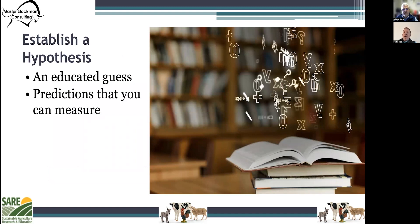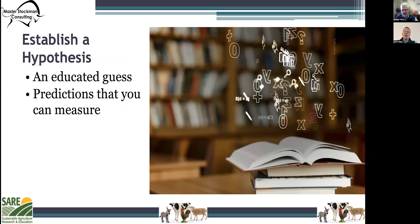Step three is establishing a hypothesis. A hypothesis is simply an educated guess about how things work. It is an attempt to answer your question with an explanation that can be tested. A good hypothesis allows you to then make a prediction — for instance, if I do this, then this will happen. Figure out both your hypothesis and the resulting prediction you will be testing. Predictions must be easy to measure. A specific ag-related example might be: if I spray Russian napweed with Milestone, I will have more desirable forages for my livestock.